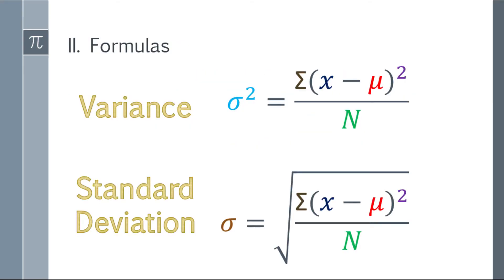So next, here are the formulas we'll use. For variance, sigma squared equals the summation of the square of the difference between the score minus the population mean. In the denominator, that will be the population size.